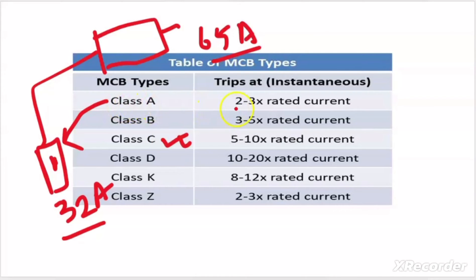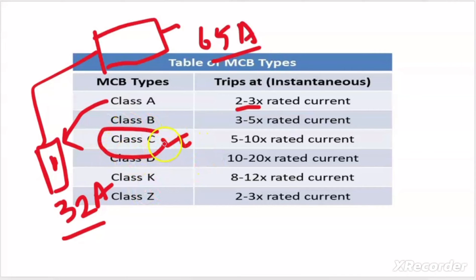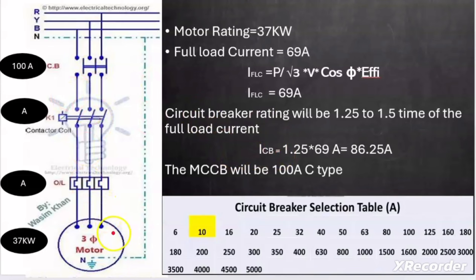Class A type holds current up to 2 to 3 times its rated current, class B type 3 to 5 times, class C type 5 to 10 times, class D type 10 to 20 times, class K type 8 to 12 times, and class Z type 2 to 3 times. For inductive loads it is recommended to use class C type, because an induction motor takes around 8 times the full load current at starting. Since our example motor is an induction motor, I selected C type for the MCCB.